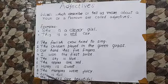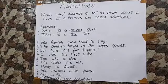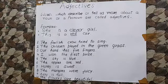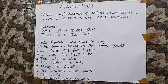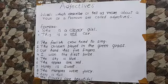Now Ajai is tall. Tall is describing about Ajai, and Ajai is a noun in this sentence, so tall is an adjective in this sentence. The flowers are beautiful. Beautiful is describing about the flowers, and flowers are a noun in this sentence, so beautiful is an adjective in this sentence.